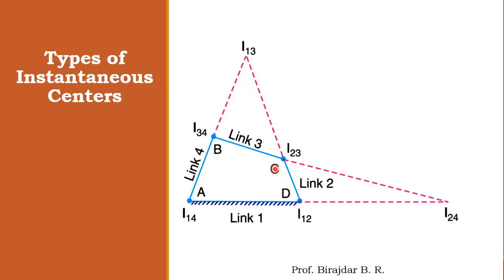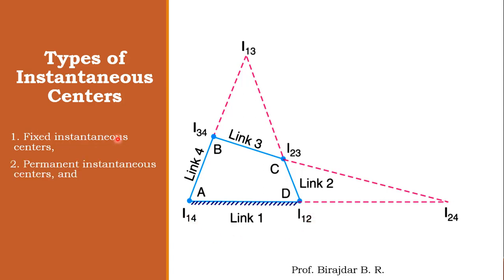We will now see the different types of instantaneous centers. The first type is the fixed instantaneous center. Out of the instantaneous centers we have seen, I₁₂ and I₁₄ are called fixed instantaneous centers because they involve the fixed link, and their positions never change.